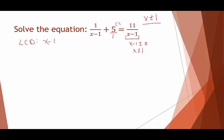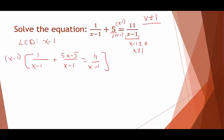The only fraction that needs adjustment is the 5 over 1 — its denominator needs the factor x minus 1. Rewriting gives 1 over (x minus 1) plus (5x minus 5) over (x minus 1) equals 11 over (x minus 1). Multiplying all three terms by x minus 1 cancels the denominators, leaving 1 plus 5x minus 5 equals 11.